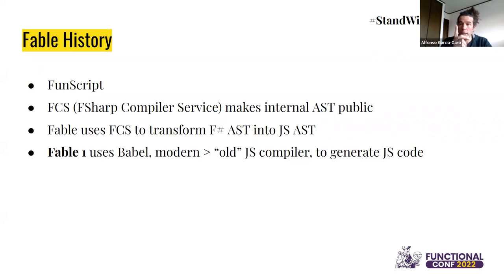Fable one, the first version, used Babel. Babel was a JavaScript compiler that was transpiling modern JavaScript to old JavaScript, because at the time not many browsers could support the new JavaScript features.